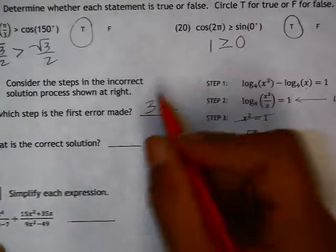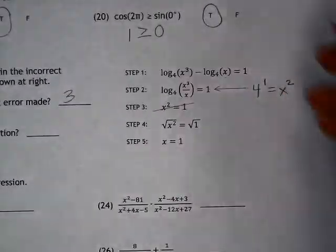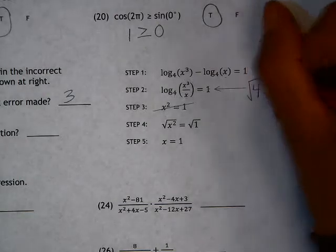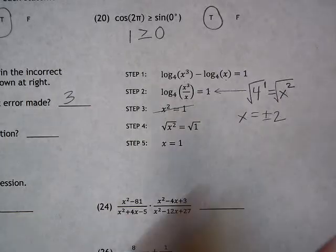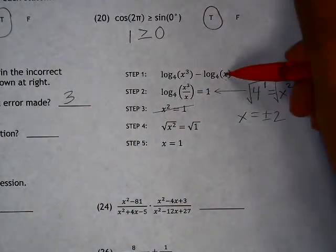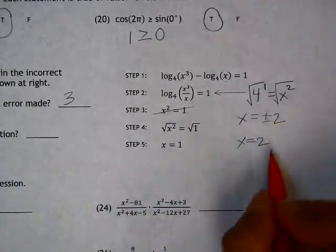So step 3 is the first step in which an error is made. What's the correct solution? If we continue solving this, we get x equals plus or minus 2. However, the negative 2 is not a valid value of x, so x is only equal to positive 2.